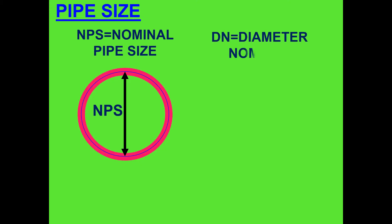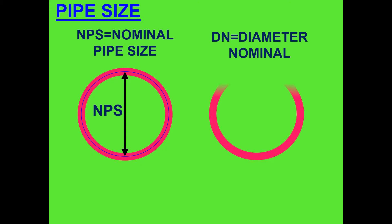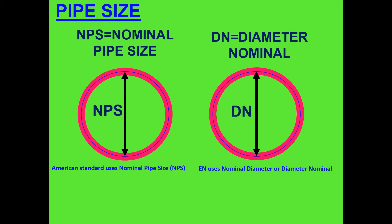Next, NPS, which is nominal pipe size — this is an IP unit pipe measurement. The American Standard uses nominal pipe size. Next, DN equals diameter nominal, or nominal diameter, which is a metric unit pipe measurement. European standards use nominal diameter, or diameter nominal.